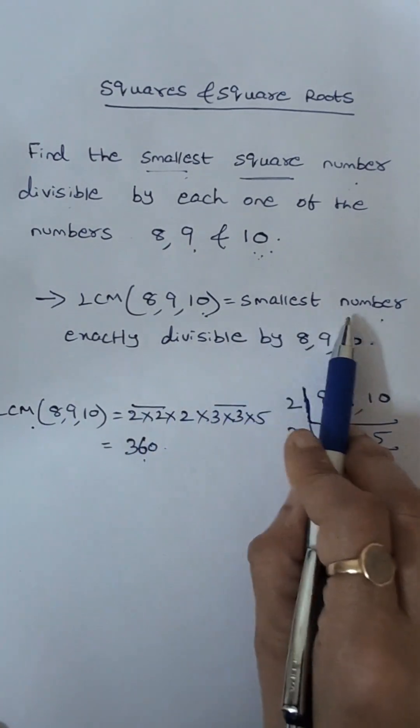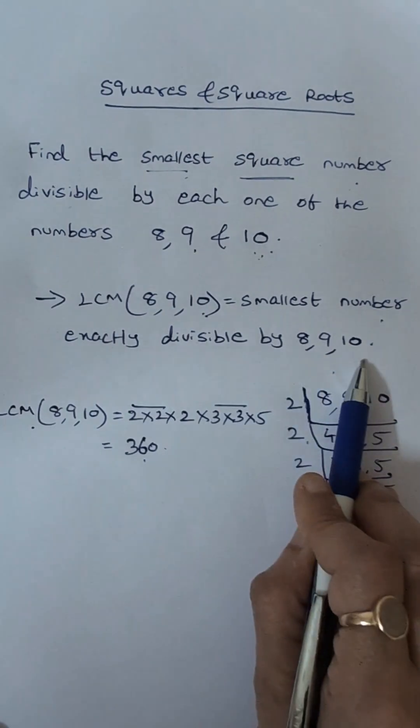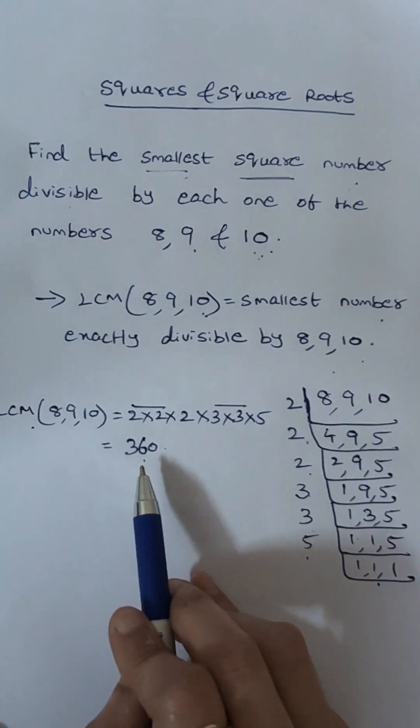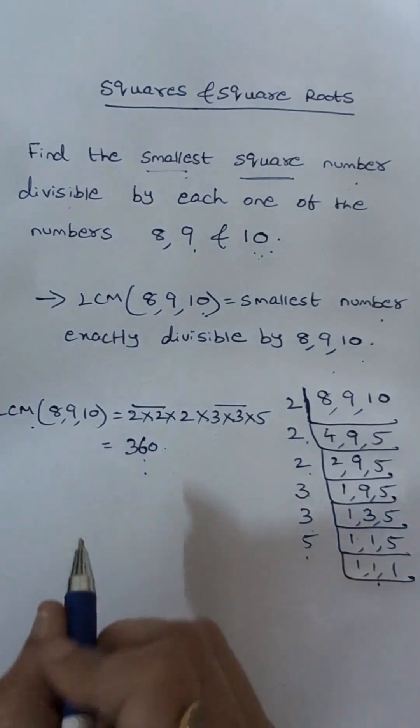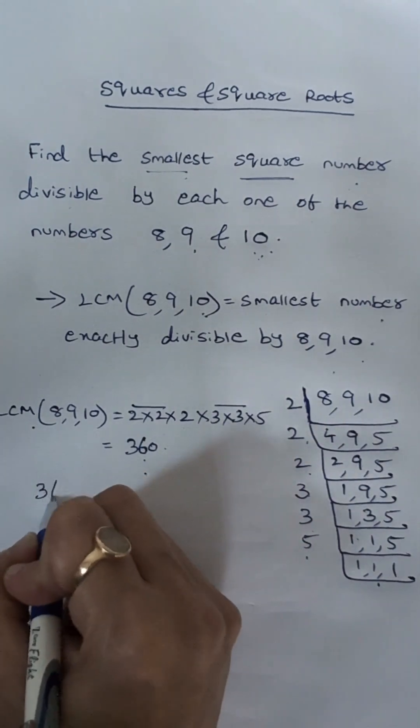Now 360 is the LCM that means this is the smallest number exactly divisible by 8, 9, 10. We want the perfect square number so we have to make this a perfect square.